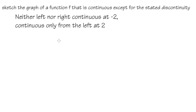We are going to sketch a graph for the function f so that it is neither left nor right continuous at x is equal to negative 2, but it's continuous only from the left at x is equal to positive 2.